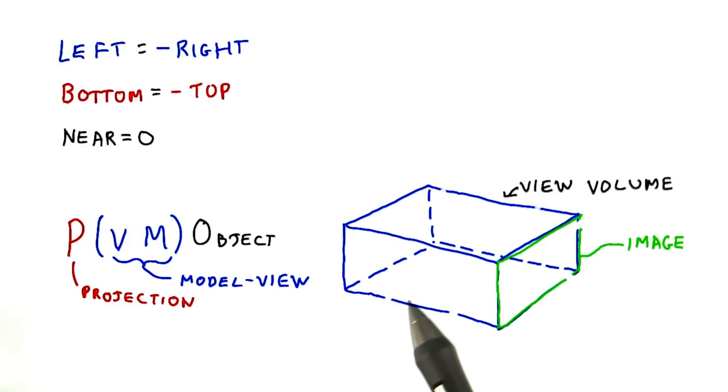This box, called the view volume, in fact performs a projection. We're not just defining a box, we're saying take everything in this box and project it onto the plus Z side of the box and make an image.